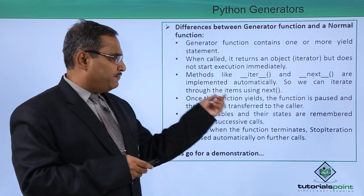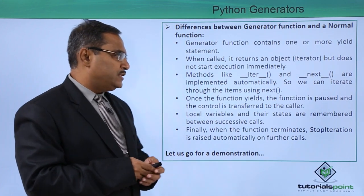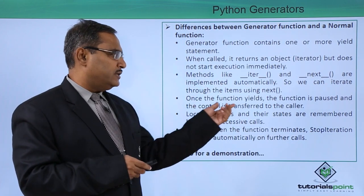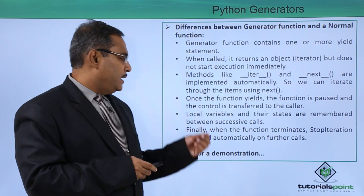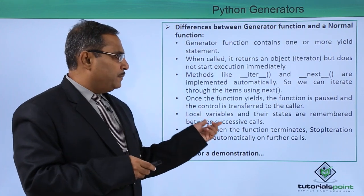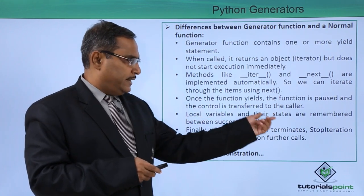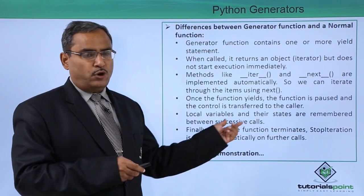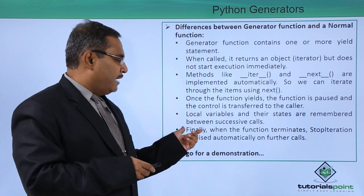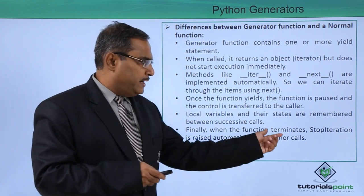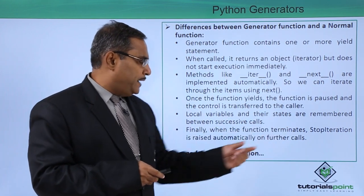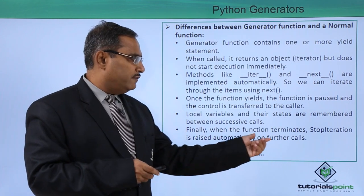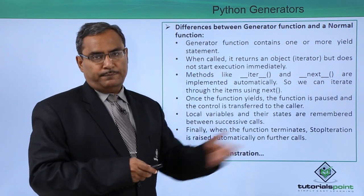Once the function yields, the function is paused and the control is transferred to the caller. Local variables and their states are remembered between successive calls. And finally, when the function terminates, StopIteration is raised automatically on further calling.